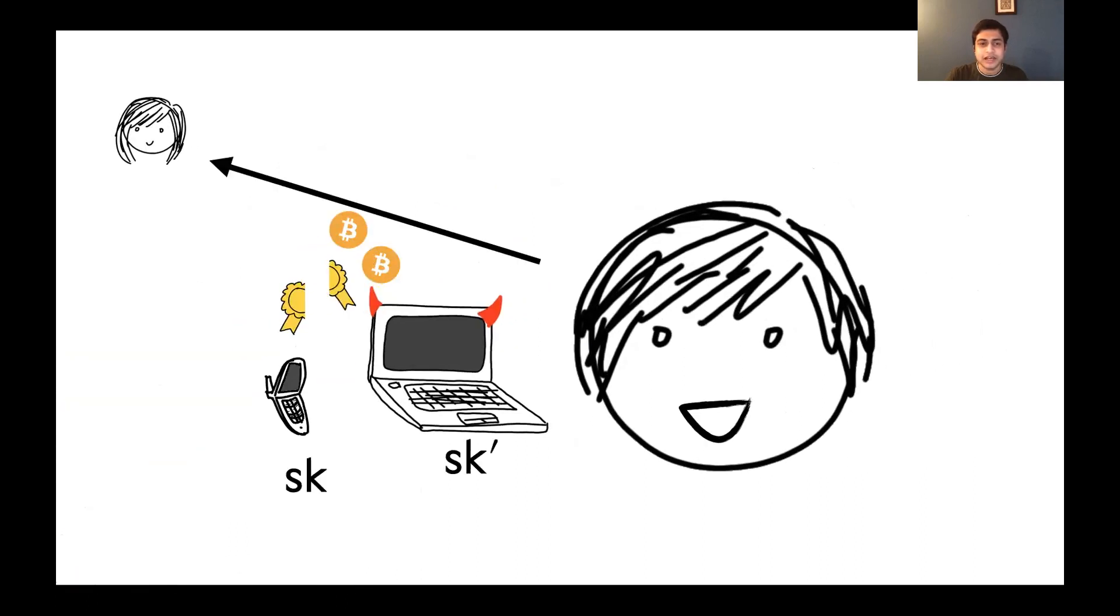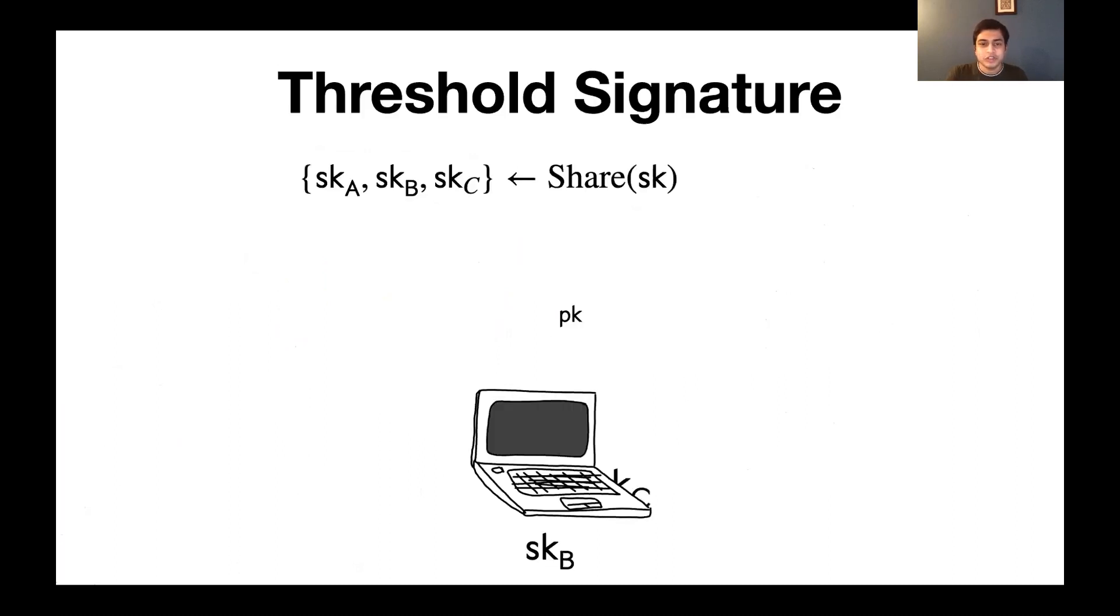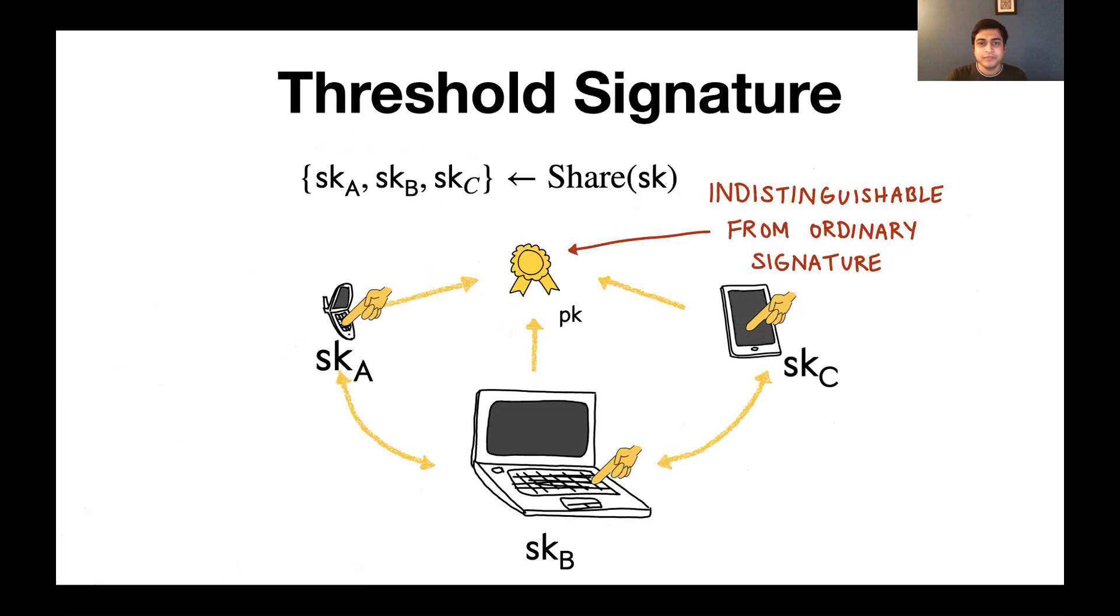One way that we could get around this is to have Bob split his signing key into fragments, call them SK and SK prime, so that even if one of the fragments is stolen, the signing key in its entirety remains safe. Threshold signatures can achieve this notion where each of the signing key fragments live on different devices, and these devices must collaborate in order to produce a signature under the common public key. An important requirement is that the resulting signature looks indistinguishable from one that was produced by the original signing algorithm.